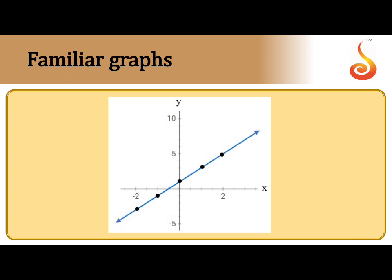Let us see some familiar graphs. First, it is a straight line. To plot a straight line graph, I take a coordinate axis — x and y axis. If a z axis is also included, it will be called a three-dimensional graph. To plot a straight line, a minimum of three collinear points are required. To generate the graph, a linear equation of the form — let us say 2y equals 3x minus 1 — may be given. You prepare a table, assign values for x, and get corresponding y values to plot the graph.